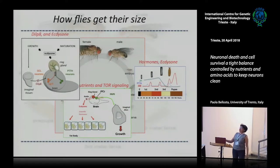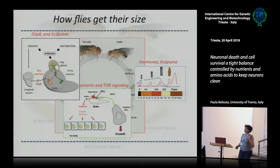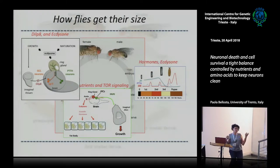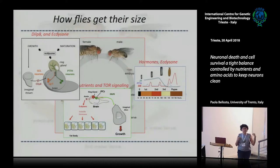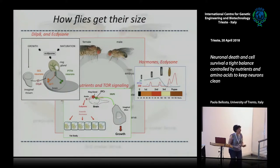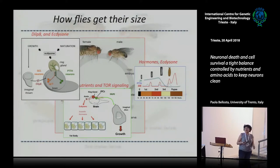There is also a very nice recently discovered mechanism involving dilp8, a molecule produced by injured tissue that is capable of regulating the length of development. Flies know when they can become an adult — if a fly has an injured imaginal disc, it cannot make a full wing and so cannot fly. So they slow down development until they can regenerate the tissue, so they can become a healthy fly and survive.